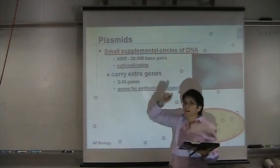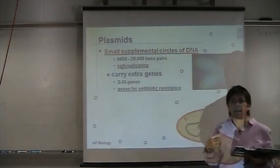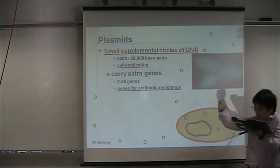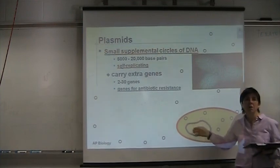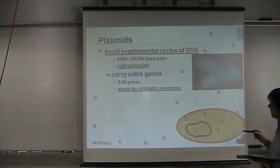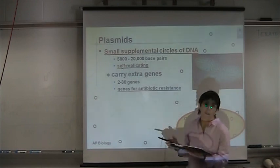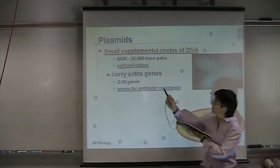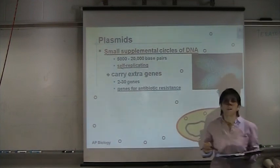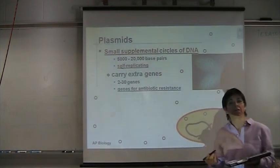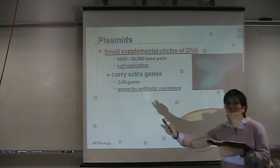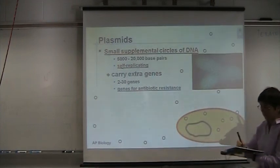Plasmids are self-replicating, meaning they can divide and copy themselves and split independently of the main DNA. The good thing for us — or bad thing if you're sick — is that in a lot of these plasmids is where the genes for antibiotic resistance are carried. And remember that bacteria can share these plasmids with each other.